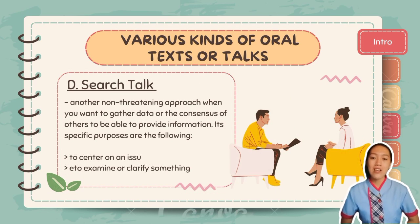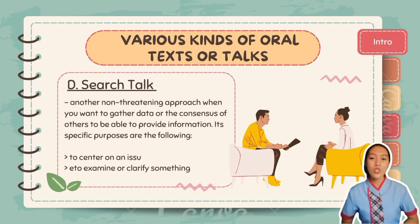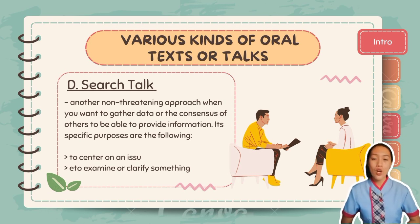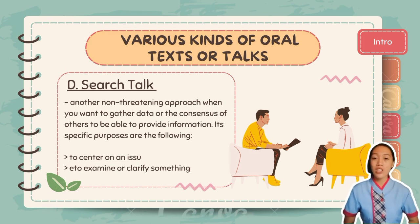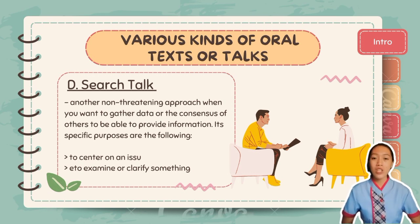Now, let's have search talk. Search talk is another non-threatening approach when you want to gather data or the consensus of others to provide information. Its purposes are to center on an issue and to examine and clarify the issue. Search talk is basically the kind of communication you use when you want to search for additional information from other people in order to achieve a holistic understanding of a specific topic or find a solution to an issue.